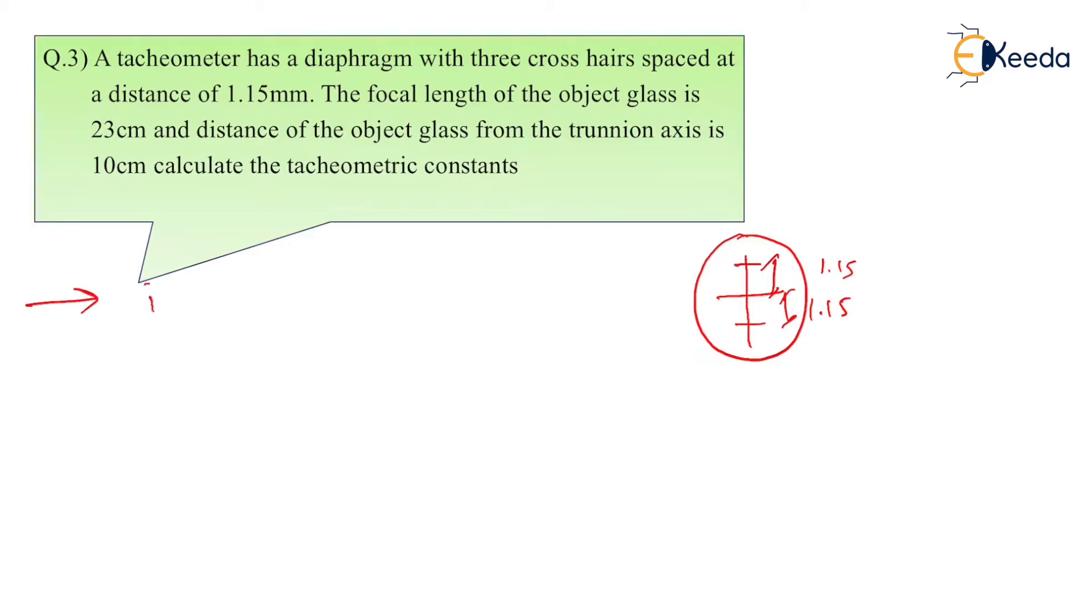So i is nothing but 2 into the distance between the crosshairs. That will be 2 into 1.15. By knowing this, we can calculate the actual distance in meters. That will be 0.0023. Then the focal length of the object glass F is given as 23 cm.